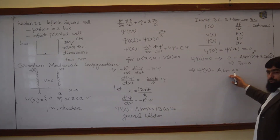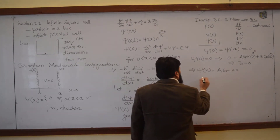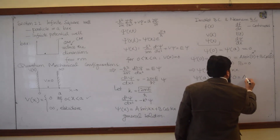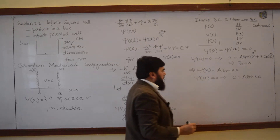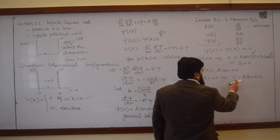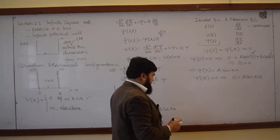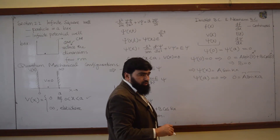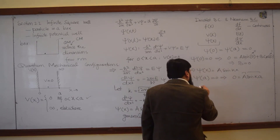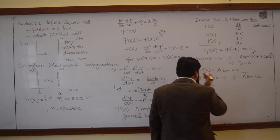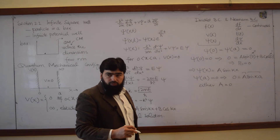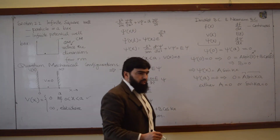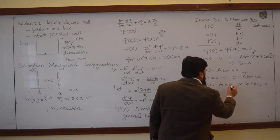Now we apply our reduced equation and move to the next boundary condition: psi(a)=0. This implies 0 = A sin(ka). For x we put a, so A sin(ka)=0. There are two factors here — one is a constant A and one is a function sin(ka). Either A=0 or sin(ka)=0. We will prove that A cannot be 0.